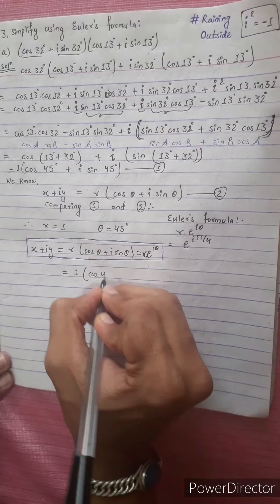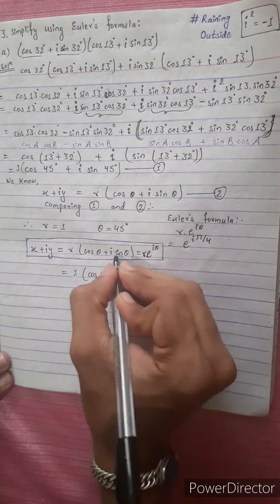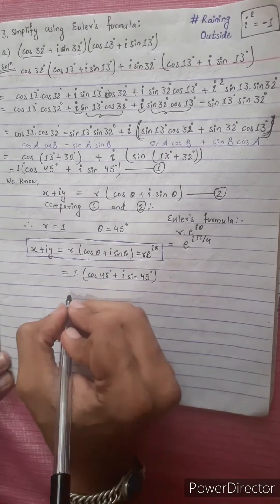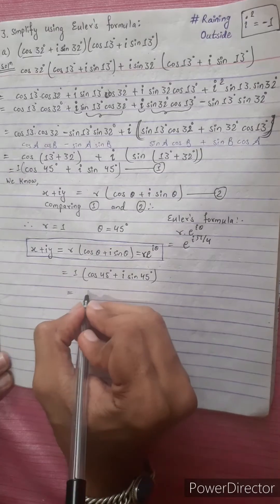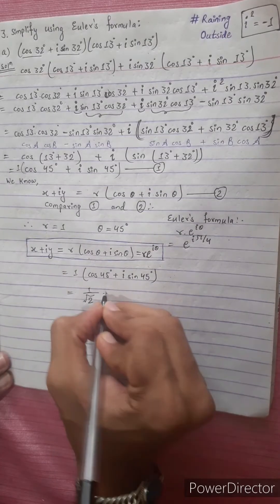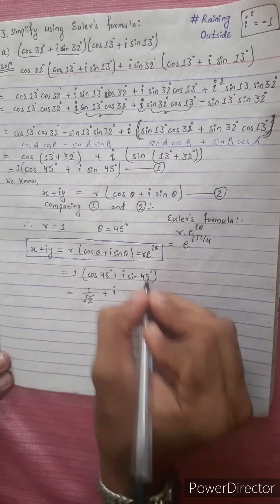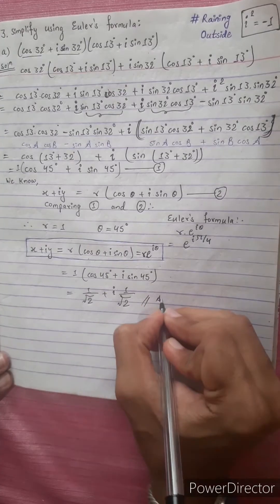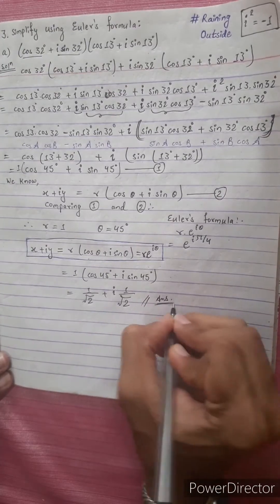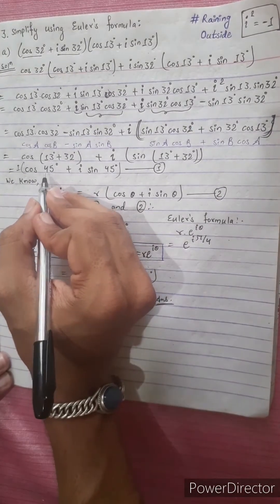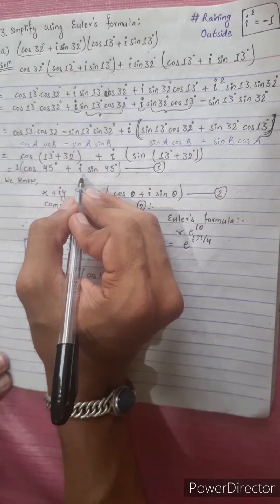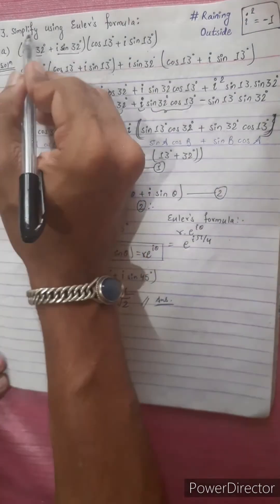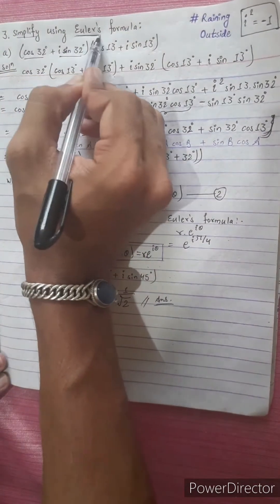1 by under root 2. This is the answer. i sin theta, 1 by under root 2. The answer is 1/√2. We can simplify using Euler formula — r is 1, e^(i theta), which is 1·e^(i·45°) = e^(i·π/4).